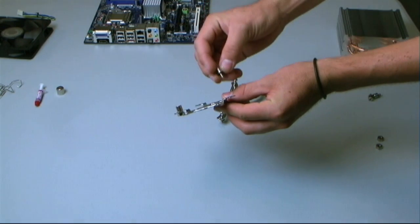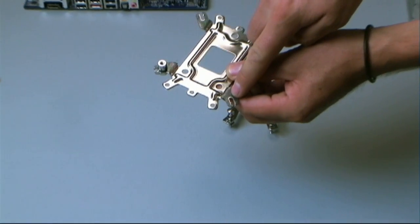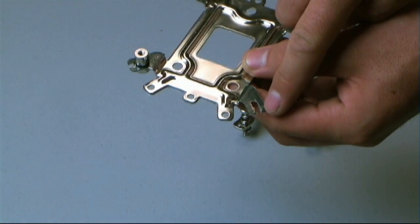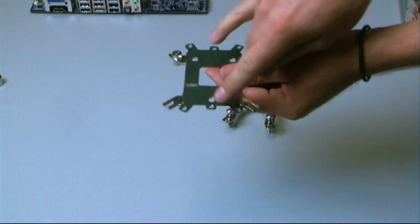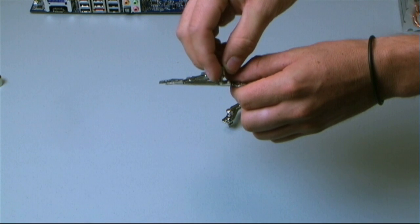You get the standoff, you find the mounting hole that you would like to use: 775, 1156, 1366. For AMD, would be the AM2 right here, 939. Simply just place this through the bracket itself.